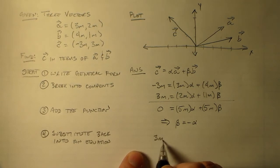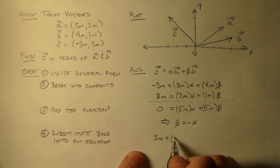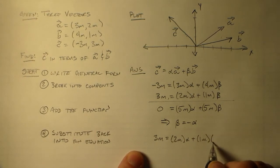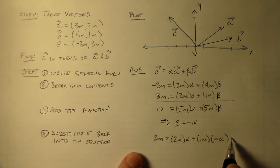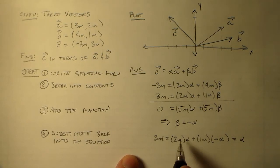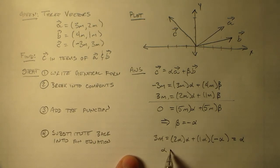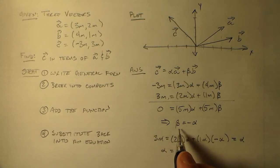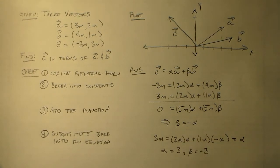So now I have 3 meters is equal to 2 meters times alpha plus 1 meter times beta, which is minus alpha, which is equal to, it turns out, alpha. And these m's cancel. The meters all cancel. So I have alpha is equal to 3. And it turns out that because of that, I have beta is equal to minus 3. How about that?